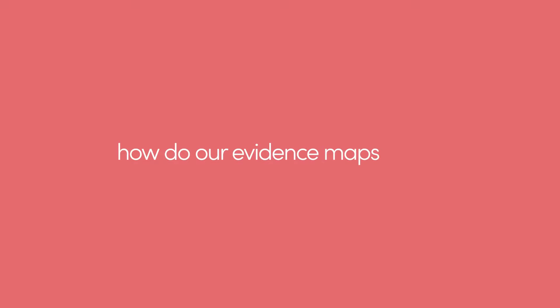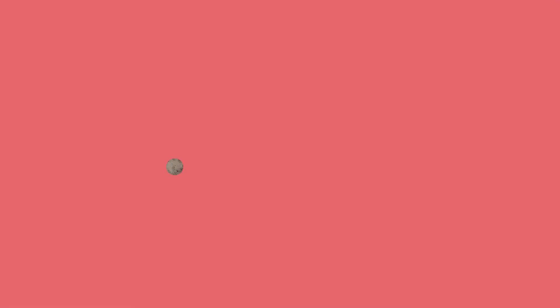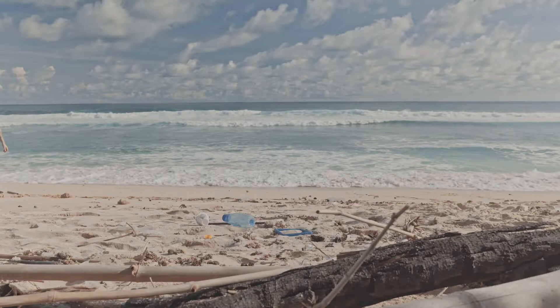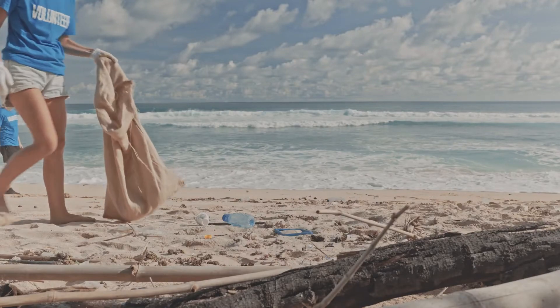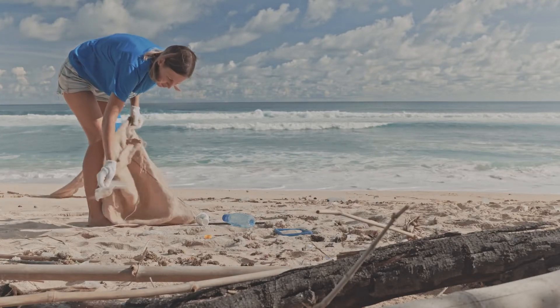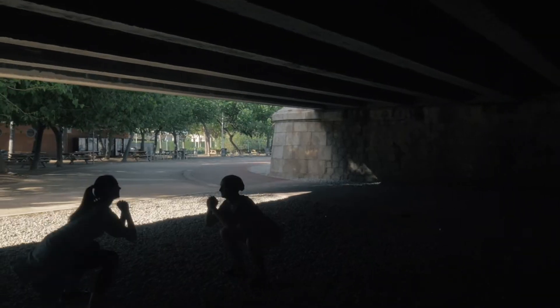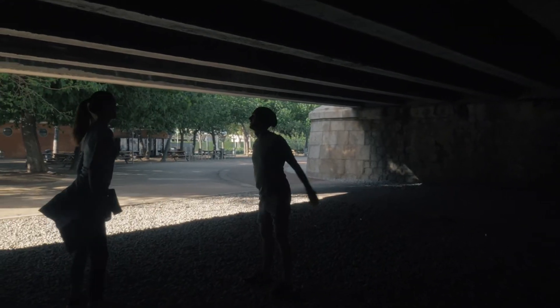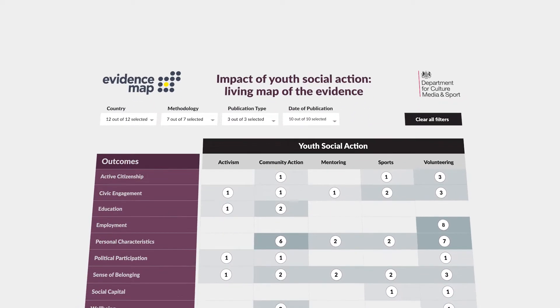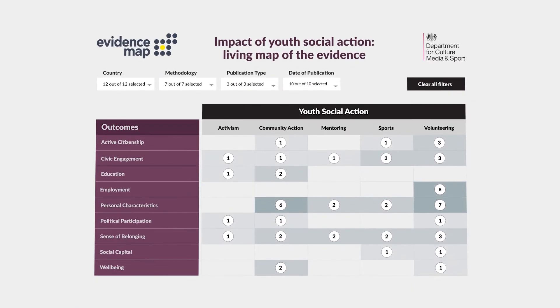Just how do our evidence maps work? The Department for Culture, Media and Sport wanted to understand how involvement in social action affects important life outcomes for young people. So we created this map of the relevant research.